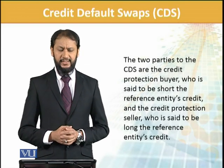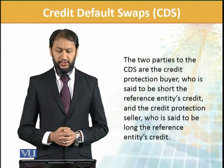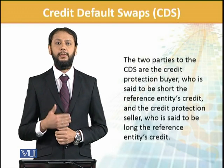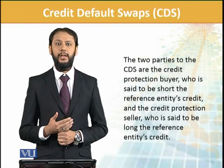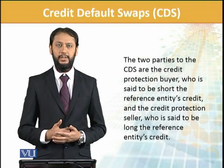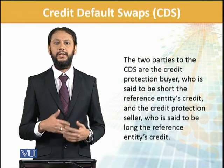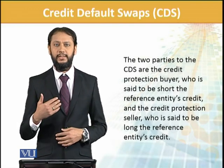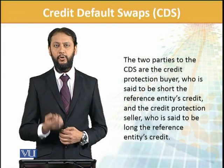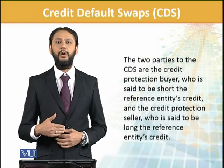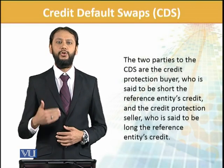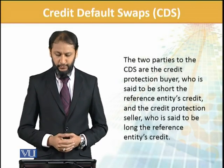The two parties to the CDS are the credit protection buyer and the credit protection seller. The investor who has the risk that the party where their funds are involved might default — they buy protection. The other party, like an insurance company, is the seller who takes on that risk and, against some premium, ensures that if that party defaults, they will pay the buyer.